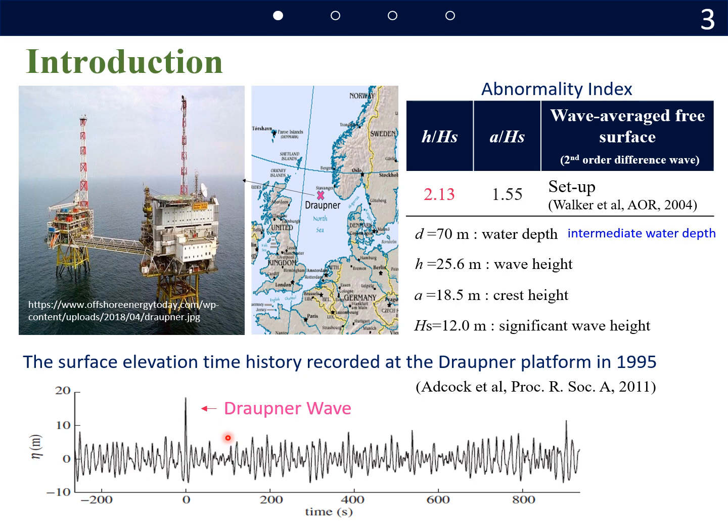A lot of researchers have been studying this wave and trying to find out why this abnormal large wave occurred. And these days, the crossing sea state is the most possible sea state that can generate the Draupner wave. To find out the angle between two wave groups, Walker et al. focused on second-order difference waves. This is a low-frequency component of this Draupner wave.